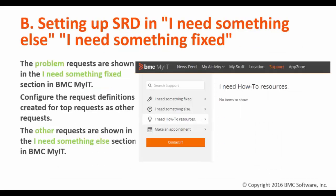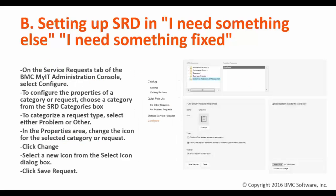You can also set up SRDs in the 'I need something else' section for other requests, and 'I need something fixed' for problem requests. To set that up, go to the MyIT administration console, select Configure, select the SRD, select the type as problem or other, and save the changes.